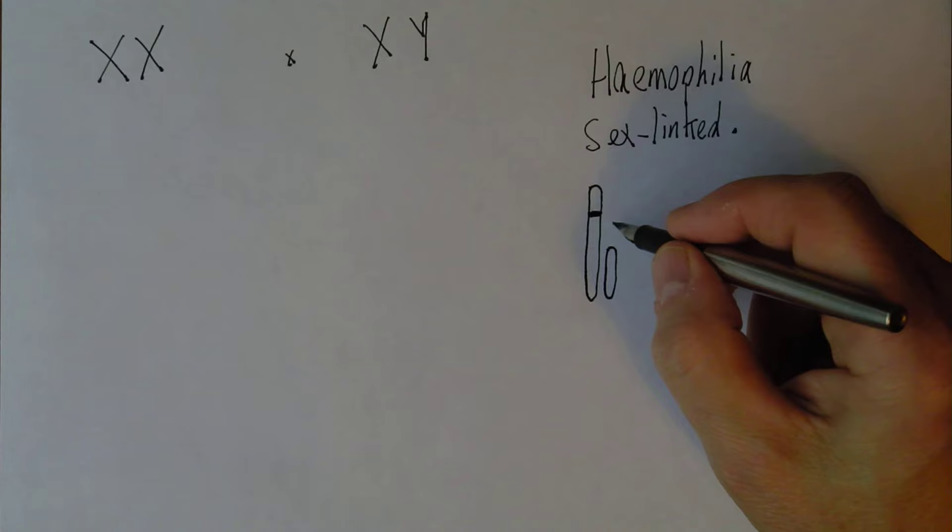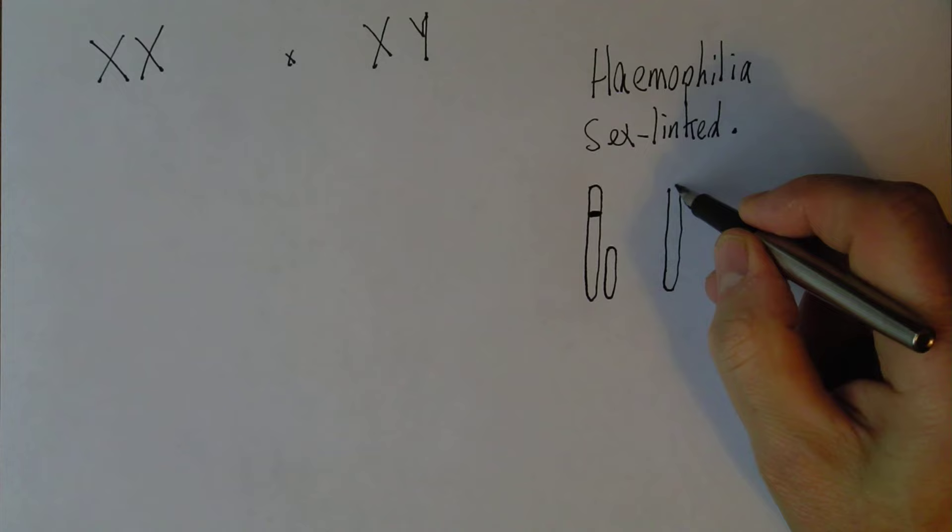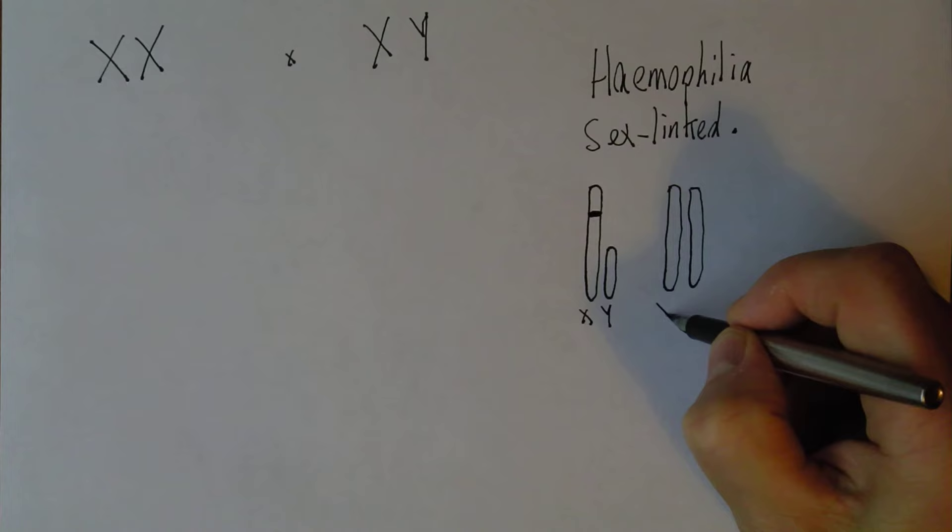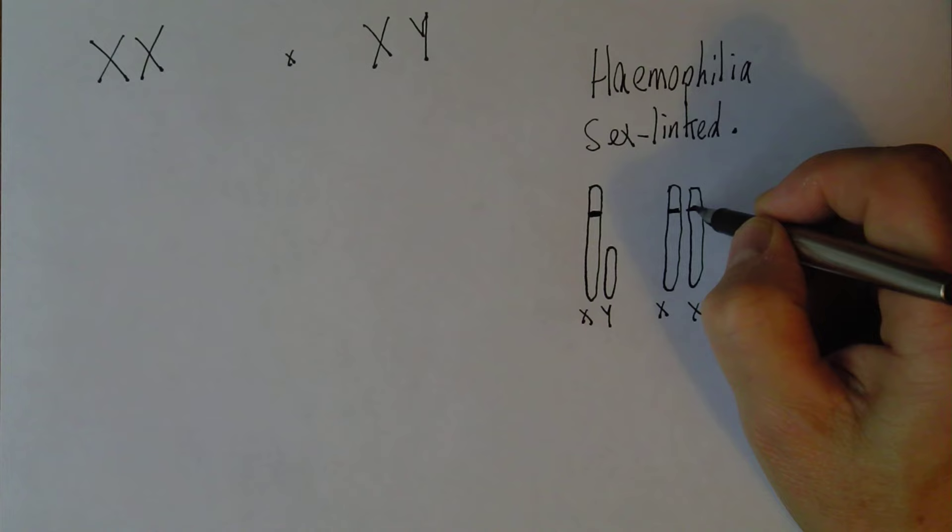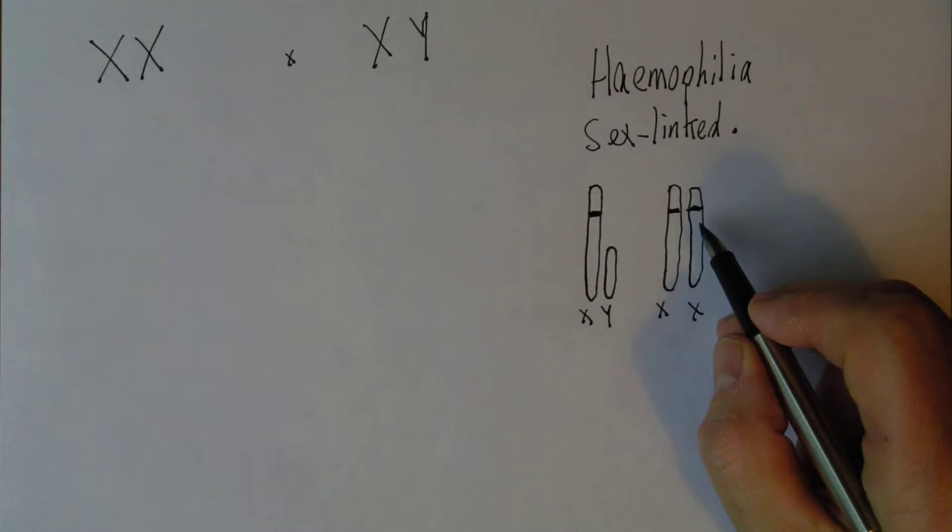Whereas if we're dealing with a female with two X chromosomes, there are two positions, so the female has two opportunities to have the gene present. This is the locus, the position on the chromosome of the gene, for example for producing Factor VIII.